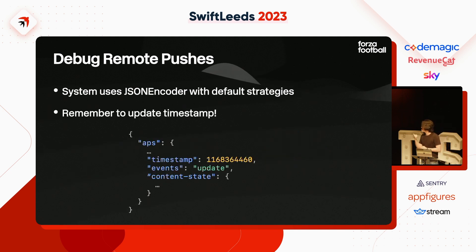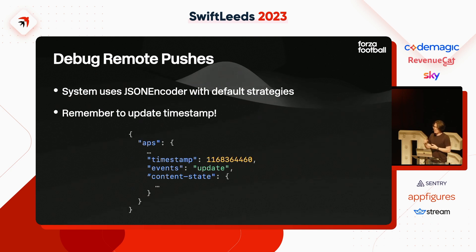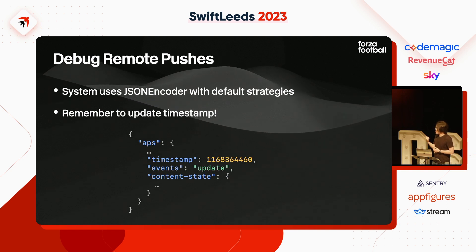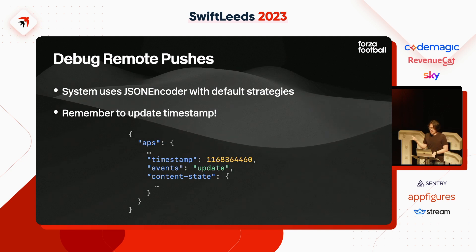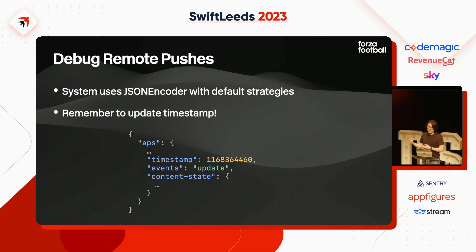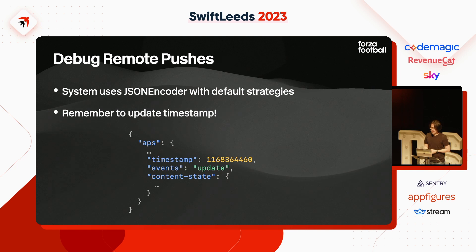Secondly, the timestamp. When testing, we send a lot of pushes and change the content state — bumping the match minute from 17 to 18 to 13 minutes. Sometimes it just doesn't update, because we forgot to update the timestamp. Apparently the system considers the timestamp: even if the content state is different, if the timestamp is the same, the system sees 'nothing new' and throws it away. So something to take note of as well.